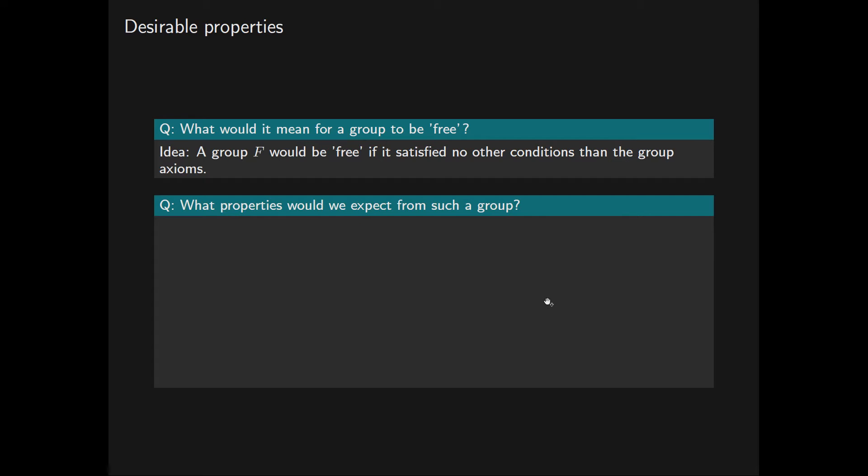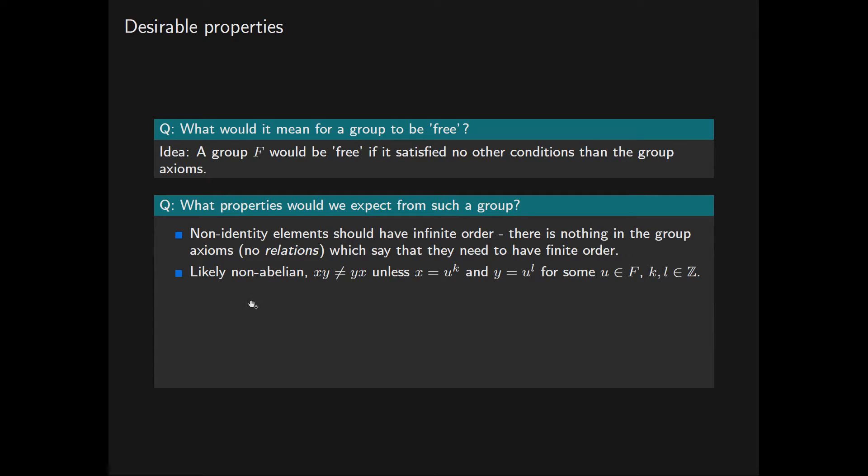So what properties might we expect from such a group? We should expect that the non-identity elements have infinite order, because there's nothing in the group axioms themselves which say that they need to have finite order. Likewise, we would expect free groups to be non-abelian, because requiring a group to be abelian means imposing an extra condition along with the group axioms, the commutativity criterion.